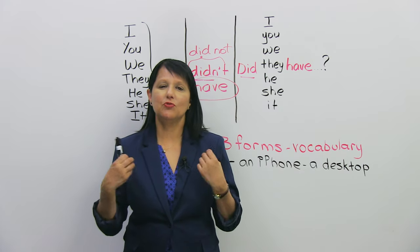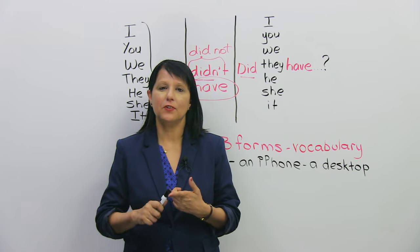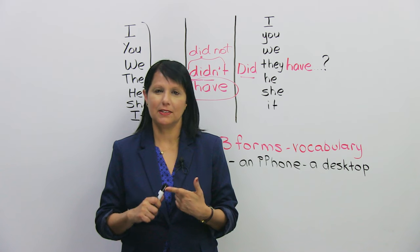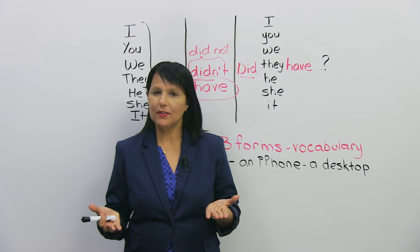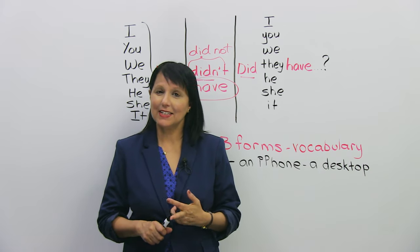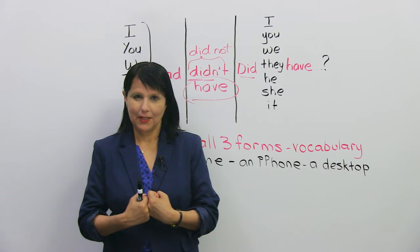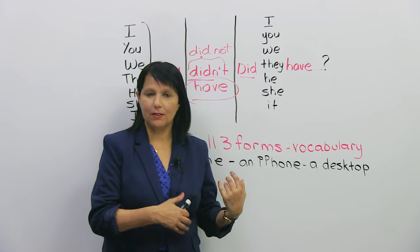So now, this is what you can do to really master the verb to have in the past tense. First, go to our website at www.engvid.com, and there you can do a quiz on this subject. Okay? Second, make it your own. What does that mean? These are my examples. All right? Here and in the quiz, I wrote those examples.